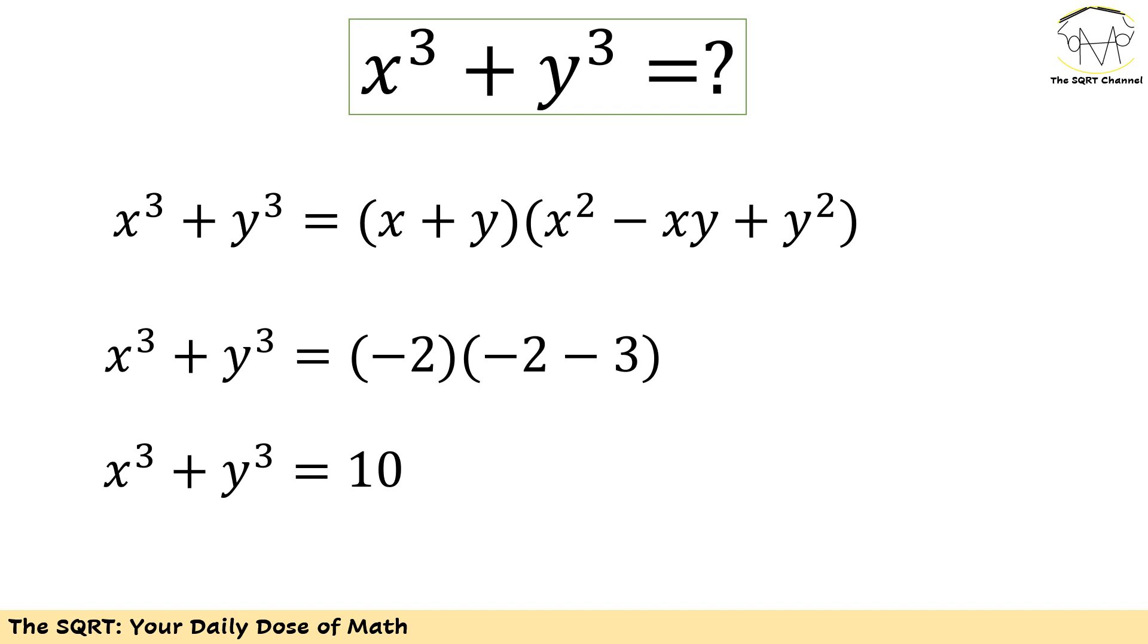I have x plus y as negative 2. I have x squared plus y squared as negative 2 and I have xy as 3. So at the end if you replace them you're going to see that x cubed plus y cubed is going to be 10 and we solve the problem.